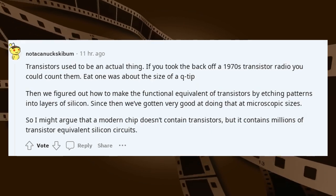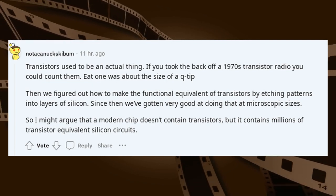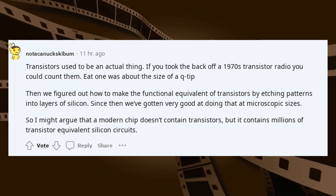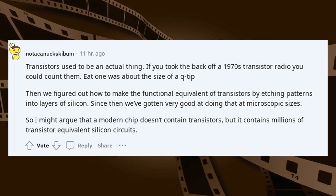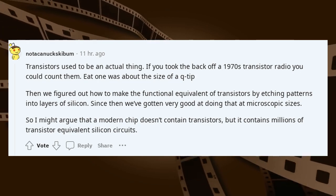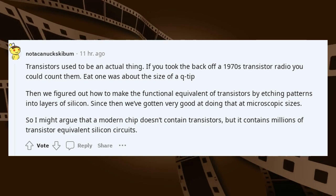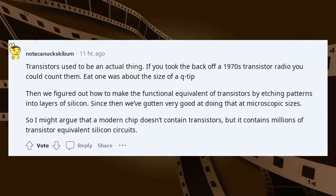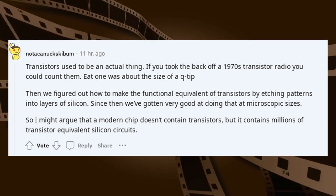Transistors used to be an actual physical thing. If you took the back off a 1970s transistor radio you could count them — each one was about the size of a Q-tip. Then we figured out how to make the functional equivalent of transistors by etching patterns into layers of silicon. Since then we've gotten very good at doing that at microscopic sizes. So a modern chip doesn't really contain transistors — it contains millions of transistor-equivalent silicon circuits.